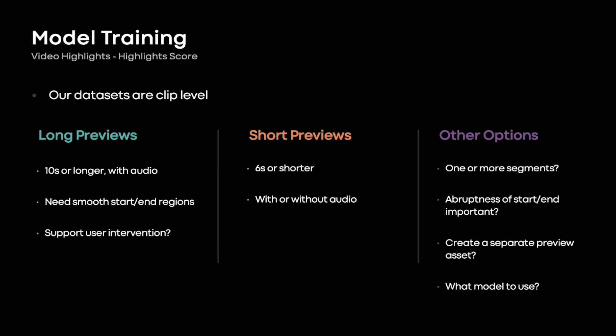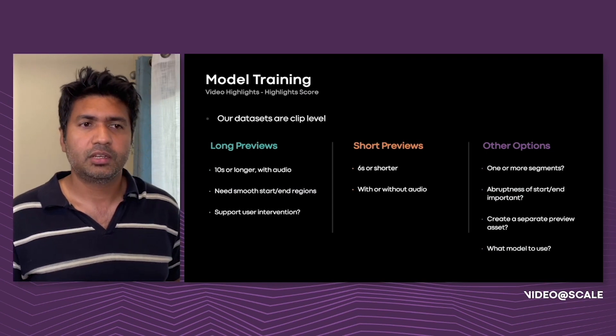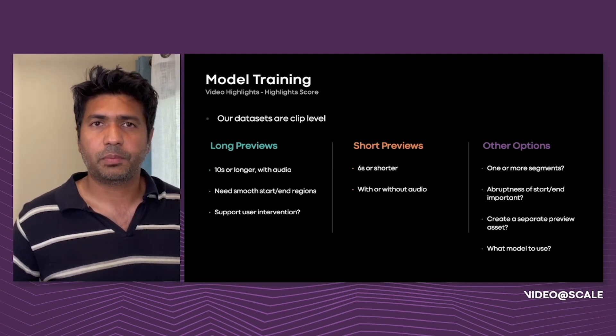Our platform needs to support multiple different effect generations — for example, long-form previews that include audio and possibly allow user intervention, and short-form previews that may be a sequence of multiple interesting regions served without audio, with additional fade-out effects. Another thing to keep in mind is that while a generic model can be a catch-all, models that target specific verticals are typically better at predicting interesting regions. For example, the approach to detect highlights for a music video may be totally different from one for cooking videos. We developed our infrastructure with the ability to channel highlight scores from different models as well.